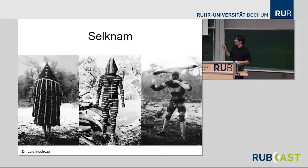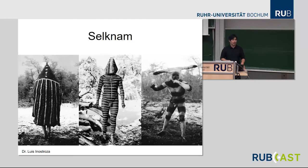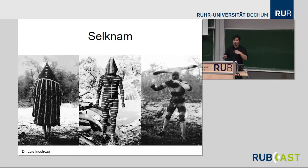On Tierra del Fuego Island, the Selknam or Onas were completely killed already by the beginning of the 20th century because of the exploitation of animal husbandry. Those Indians were hunting the sheep, and then the owners of those sheep were killing the Indians because they were hunting them. The Indians never understood the concept of private property.